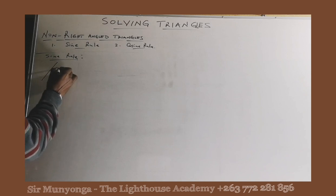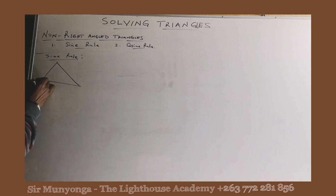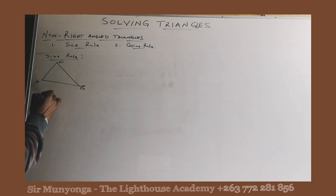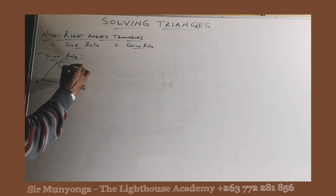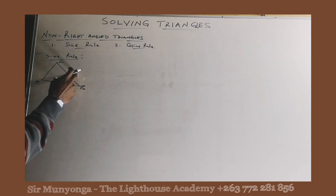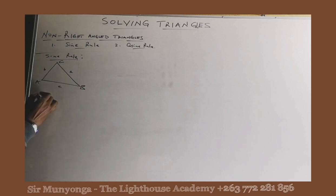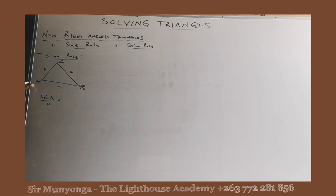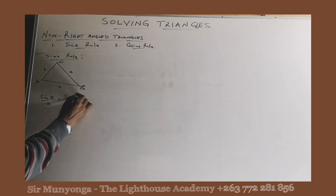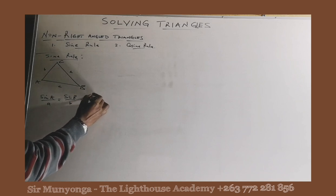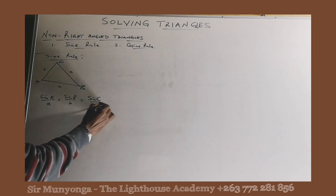So what does the sine rule state? Let's say you have a non-right-angled triangle. The standard convention is to name the sides using lower case letters — lower case a, lower case b, lower case c. The sine rule states that these ratios are equal: sine A over a is equal to sine B over b is equal to sine C over c.